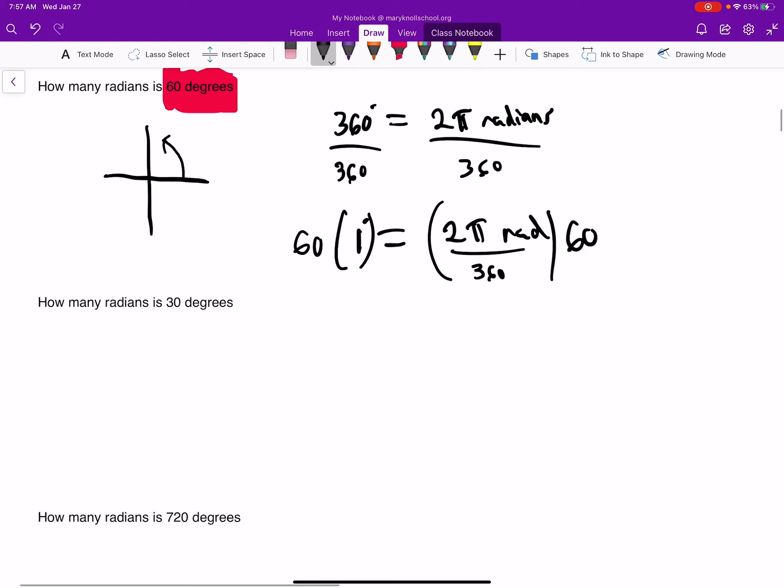And then 60 degrees equals 60 times, remember that this is 60 divided by 1. So 60 gets multiplied to the top. So these two get multiplied. 120. The π is still there. The radians is still there.